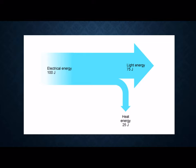In this diagram we can see, again, electrical energy of 100 joules being converted into both light and heat energy. If we take the light bulb example again, we can see that this light bulb would be more efficient than the last — why? Because 75 out of 100 joules are being used for light, whilst only 25 joules are wasted.